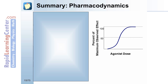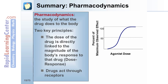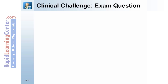In summary, pharmacodynamics is the study of what the drug does to the body. There are two key principles: the dose of the drug is directly linked to the magnitude of the body's response, and for a given dose there will be a given biological response directly proportional to the dose — known as the dose response. The second principle is that drugs act through receptors. Now let's test your understanding with a clinical challenge question.